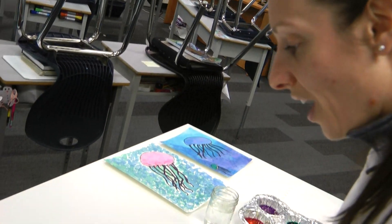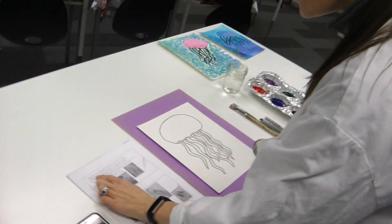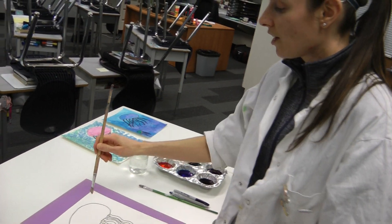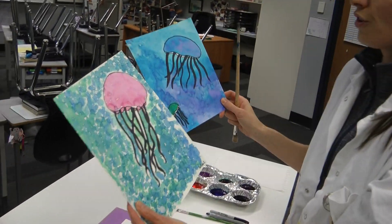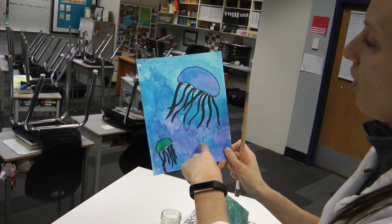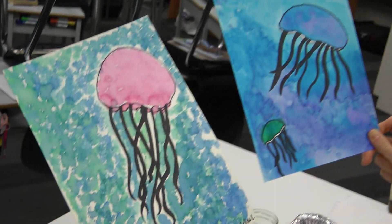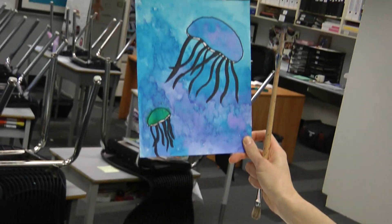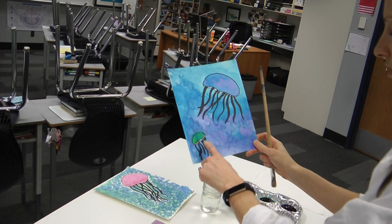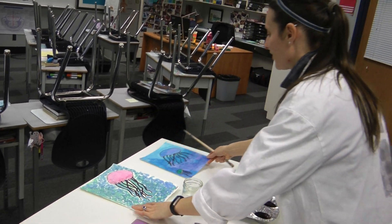All right. Here we are. Back for our next step. We are on step five of seven. You're nearly done. Congrats to you. So, it says, use a stippling effect to paint the background of your jellyfish. Stippling. It's a funny word. What that means is you are going to take your brush, put it in some water, put it in some paint, and go like this to make your colors.